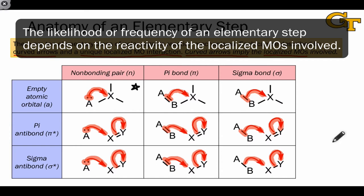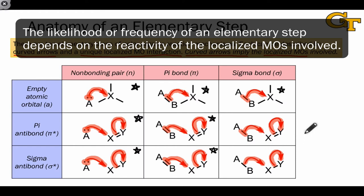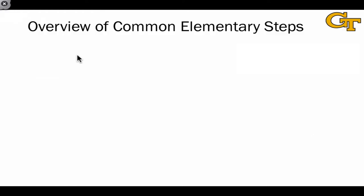The beauty of the framework is that it shows us all of the possibilities and helps us see that where we're going to live generally in terms of electron flow are areas where we have relatively reactive orbitals involved — such as non-bonding lone pairs, empty atomic orbitals, and in some cases pi bonds. On this slide, we're going to list the ten common elementary steps, but before we do that, we need to define a couple of terms.